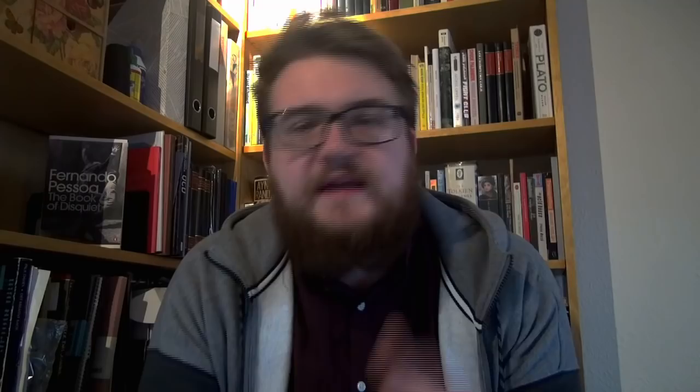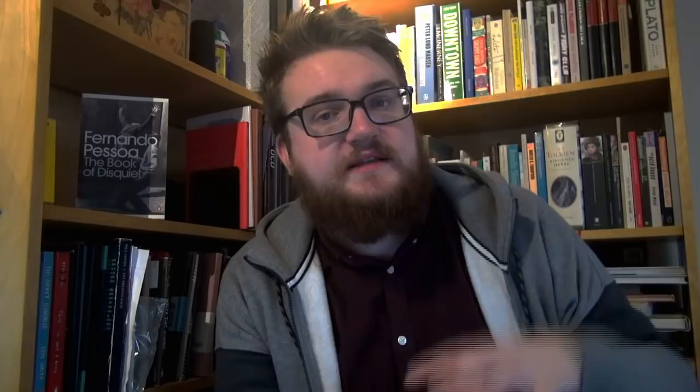Signs are two-sided according to Saussure. One side is the signifier, or 'signifiant' in the original French — it's the sign we use to refer to the thing we're talking about. In language, this is a word, for example the word 'dog.' The thing we talk about — our ideas and concepts — is called the signified, or 'signifié' in the original French. Taking our example, this could be an actual dog.